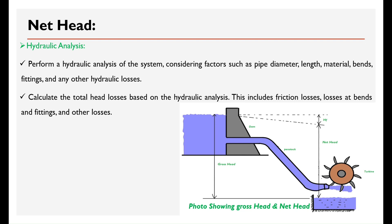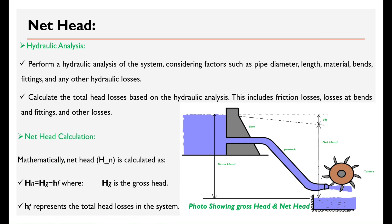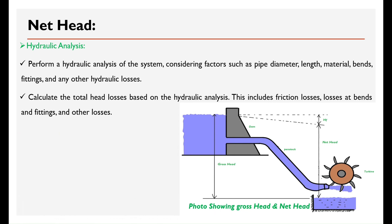Hydraulic analysis: Net head is calculated based on the hydraulic analysis of the system, considering factors such as pipe diameter, length, material, bends, fittings, and any other hydraulic losses. Calculate the total head losses based on the hydraulic analysis. This includes friction losses, losses at bends and fittings, and other losses.